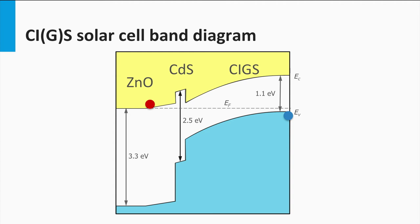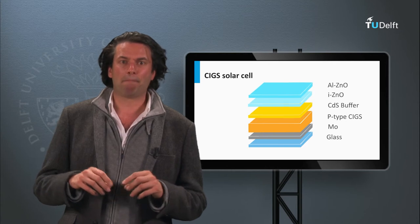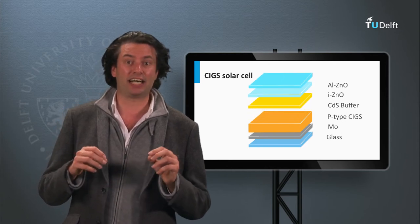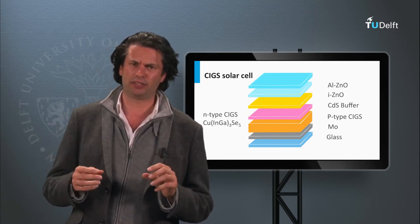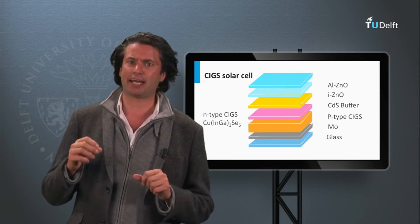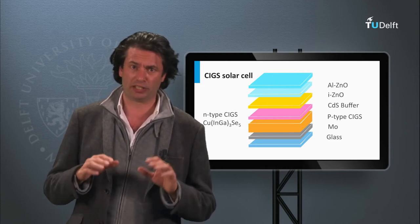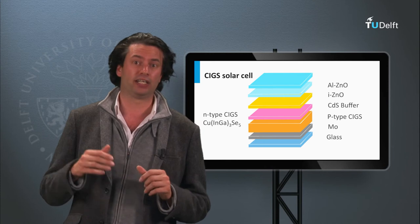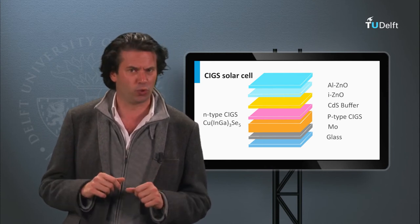The electrons have to be separated at the CIGS cadmium sulfide interface. As with every interface, this interface has more defects and could act as a loss mechanism to the minority electrons. This can be prevented by placing an n-type CIGS type of layer between the p-type CIGS and the cadmium sulfide interface, which screens the cadmium sulfide CIGS interface from the holes.